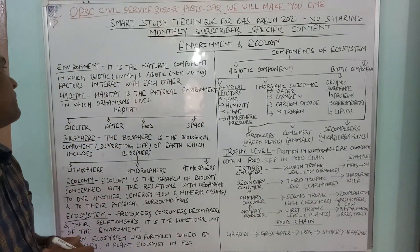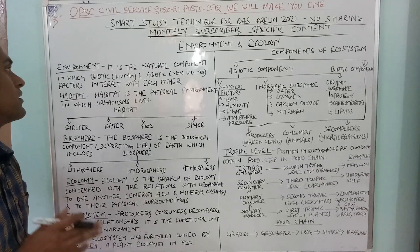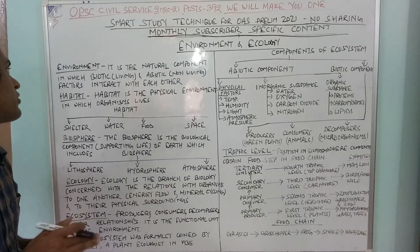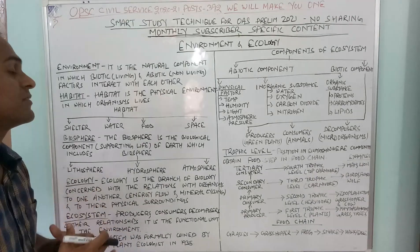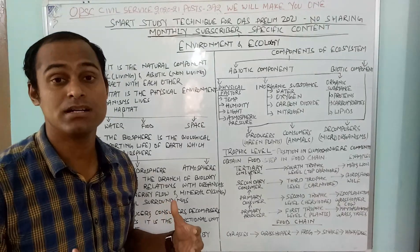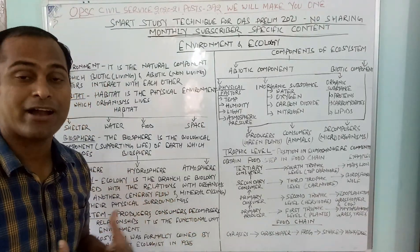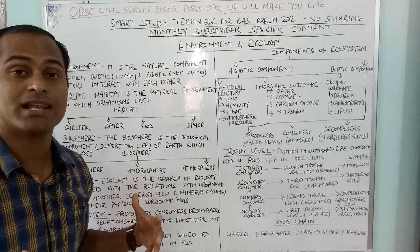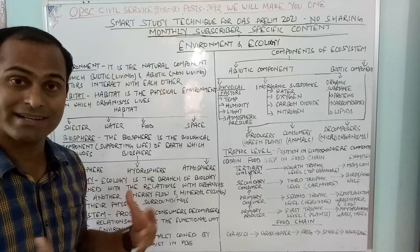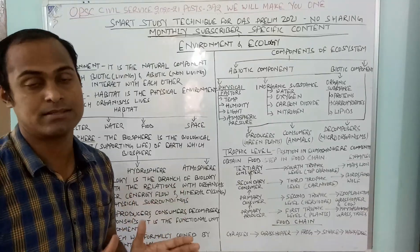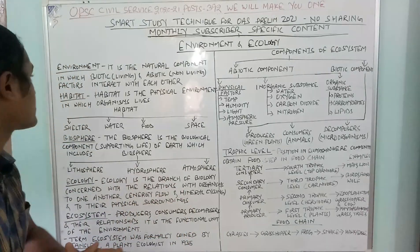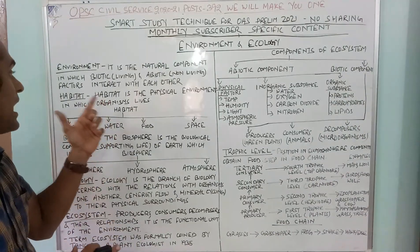Environment is the natural component in which biotic (living) and abiotic (non-living) factors interact with each other. Both the living and non-living components interacting together constitute the environment.